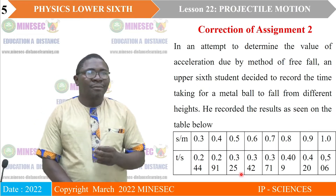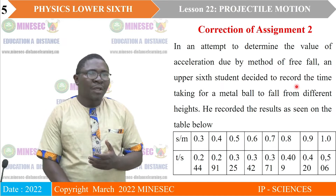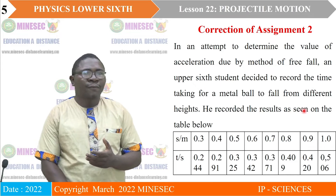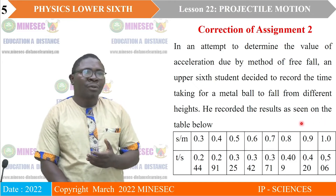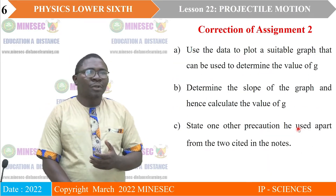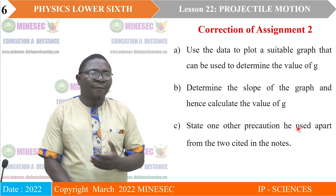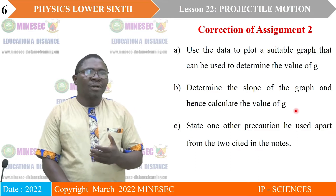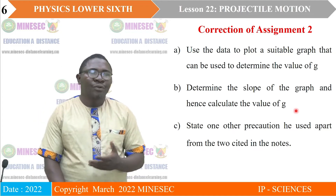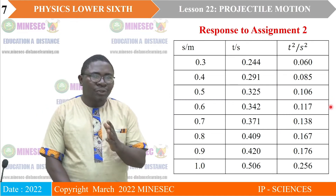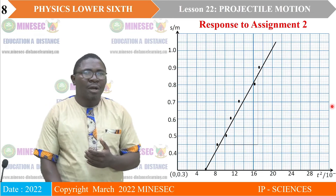Correction of assignment 2. The question: in an attempt to determine the value of acceleration due to gravity by method of free fall, a student recorded the time taken for a metal ball to fall from different heights. He recorded the results as shown in the table below. Use the data to plot a suitable graph to determine the value of G. After going through the table, we saw how our graph looked.